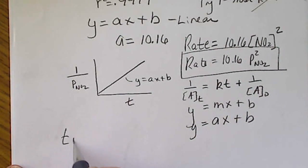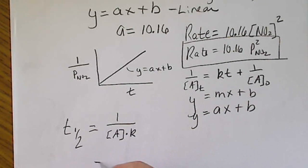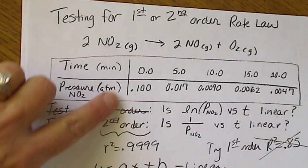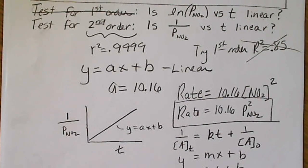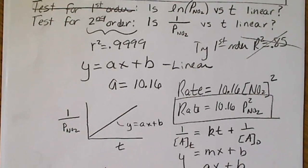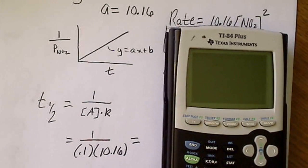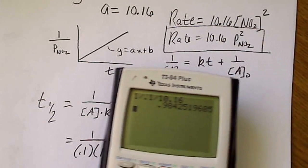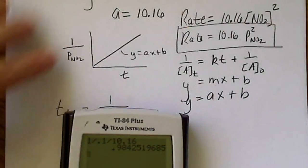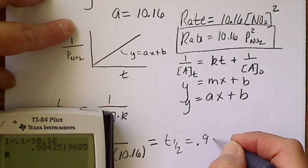We can also calculate a half-life. For second order, the half-life formula is t½ = 1 / (C₀ × k). The initial concentration is 0.1, and k is 10.16, so: 1 ÷ 0.1 ÷ 10.16 gives approximately 0.984. So our half-life is approximately 0.9 minutes.